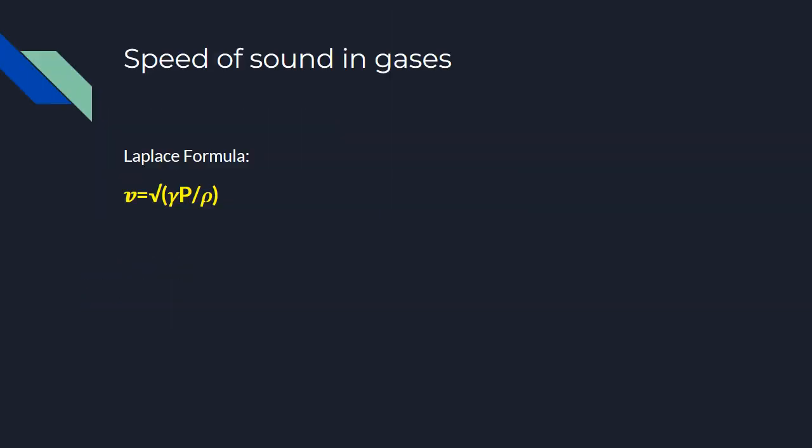Now let's go to the speed of sound. For that, we have to use Laplace formula: v equals the square root of gamma P by rho, where gamma is the adiabatic constant, P is the pressure, and rho is the density. In the question, it is given that the pressure and all external circumstances are constant.